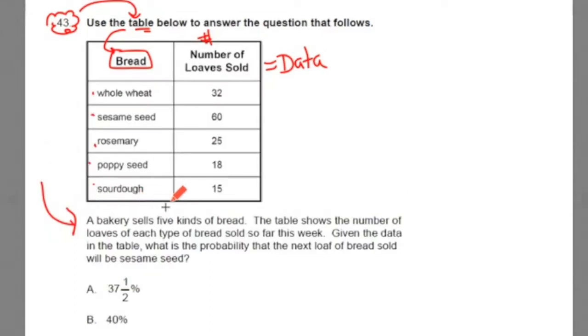A bakery sells five kinds of bread, which matches up with what we observed. The table shows the number of loaves of each type of bread sold so far this week. Given the data in the table, what is the probability that the next loaf of bread sold will be sesame seed? Now, if we've made some quick observations about the table before reading the problem, both of these things are going to match up.